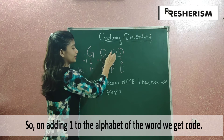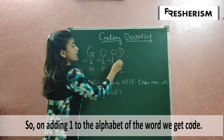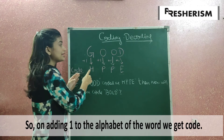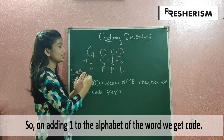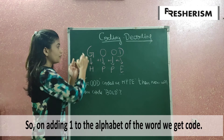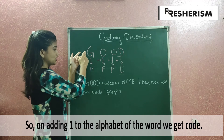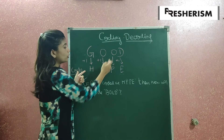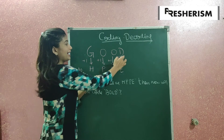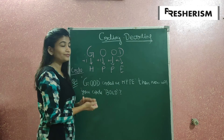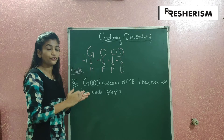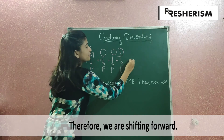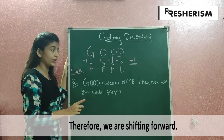If I add plus 1 with O, I get P. If I add plus 1 with D, I get E. That means the first pattern is shifting forward. G forward is H; O, the next alphabet, is P; O next is P; and D next is E. So we are shifting forward — the rule is plus 1.